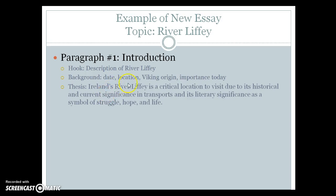So you can tell here that I'm going to write about its historical significance and also its literary significance in my essay. This provides an overview of what my paragraphs will be about. I also give specifics, such as that I'm going to talk about transportation and then also the symbolic meaning.